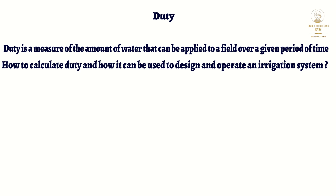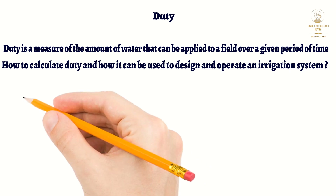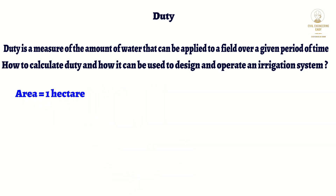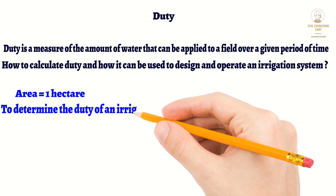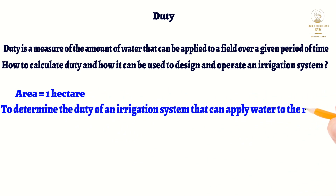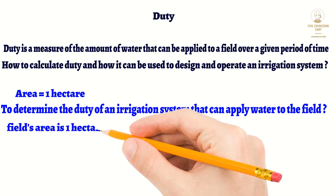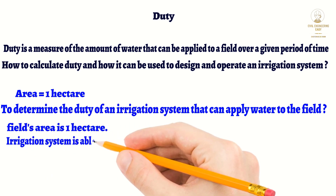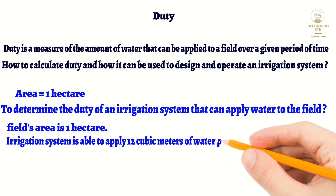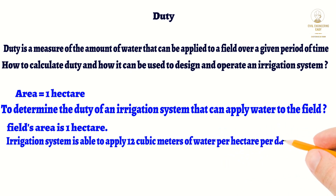Here is an example of how to calculate duty in irrigation engineering. Let's say we have a field with an area of 1 hectare and we want to determine the duty of an irrigation system that can apply water to the field. The field area is 1 hectare, and the irrigation system is able to apply 12 cubic meters of water per hectare per day.